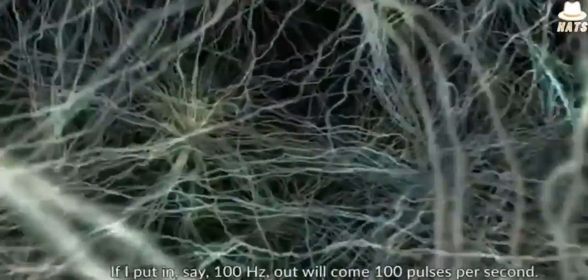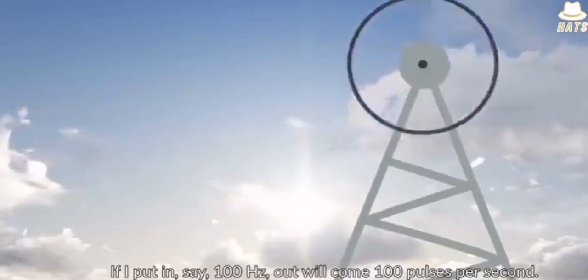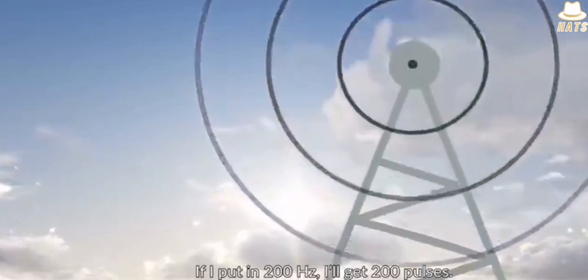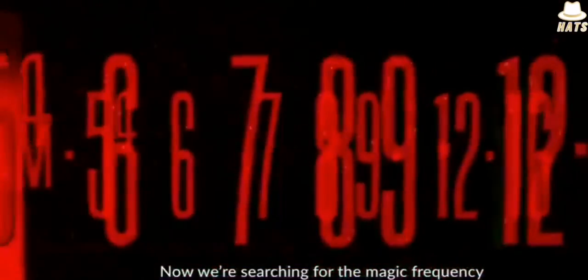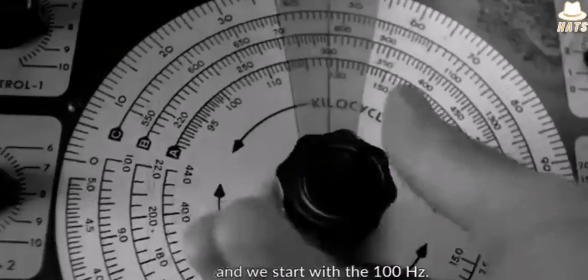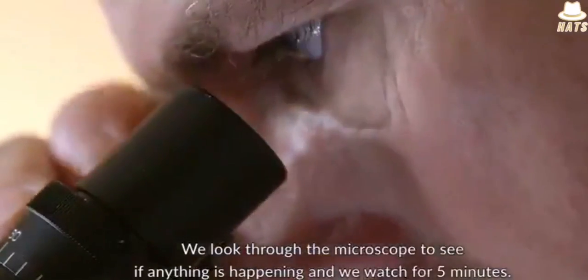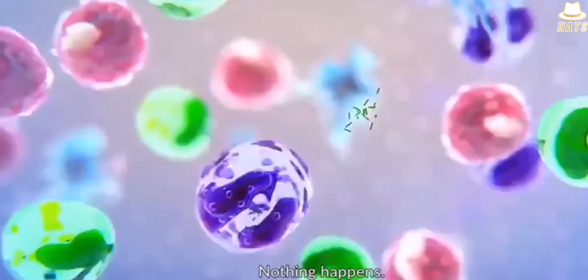If I put in, say, 100 hertz, out will come 100 pulses per second. If I put in 200 hertz, we'll get 200 pulses. So now we're searching for the magic frequency. And we start with 100 hertz. And we look through the microscope to see if anything's happening. We watch for five minutes. Nothing happens.